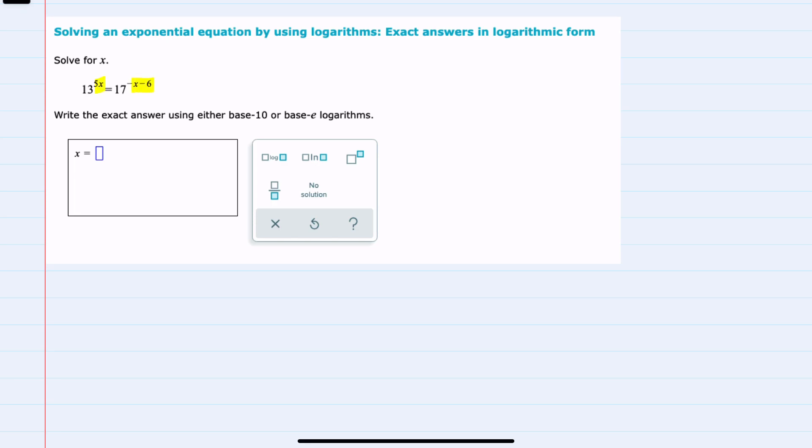x is in the exponents, and that's our motivation for using logarithms. Because when we take the log of both sides of this equation, we can use the properties of logarithms to bring those exponents down in front of the logarithms as coefficients.